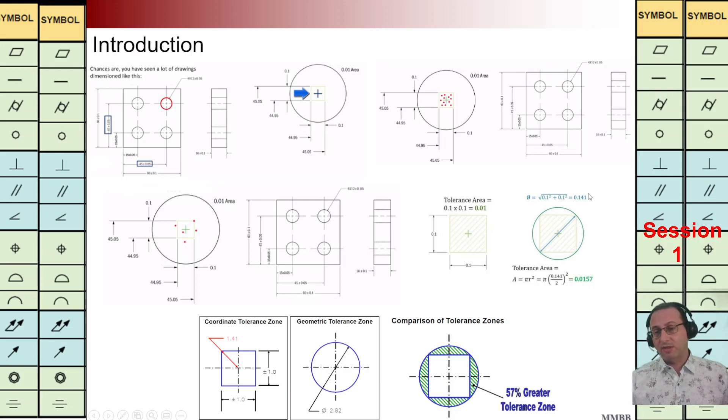As we can see here, it is calculated. The diameter of this circle divided by 2 is 0.0705. It is greater than 0.05.